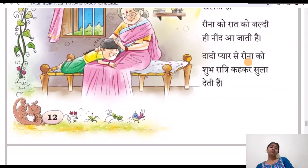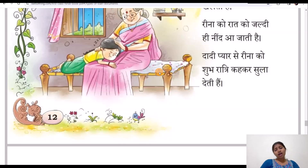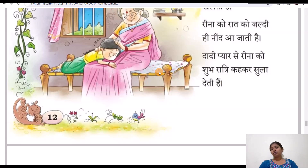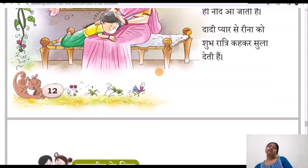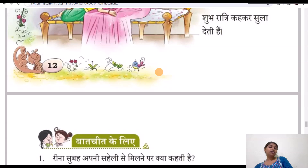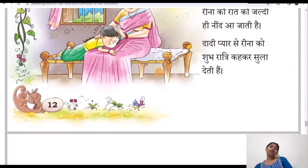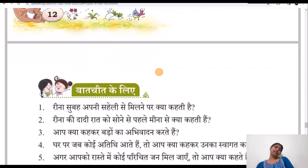'Rina apne pyare se chote bhai ke saath bhi kheli hai' — Rina also plays with her little brother. 'Rina ko raat ko jaldi hi neend aa jaati hai' — Rina has a very good habit of sleeping very early, at 8 o'clock only, not at 11 or 12 o'clock. 'Dadi pyaar se Rina ko shubhratri ka kirshola deti hai' — grandma sweetly wishes Rina good night, and then Rina goes to sleep.